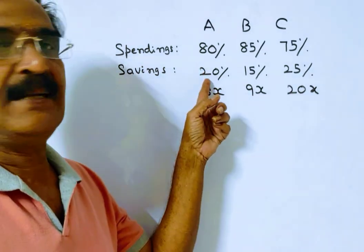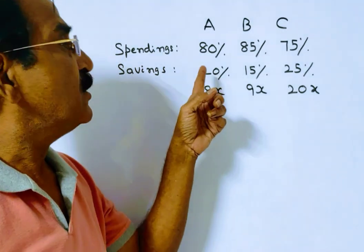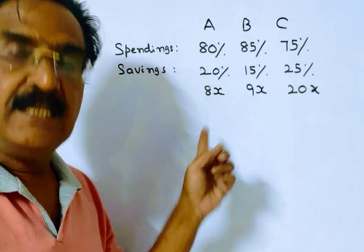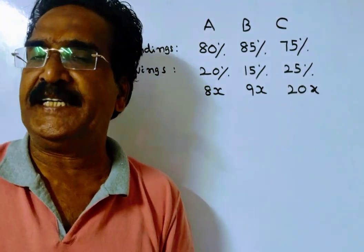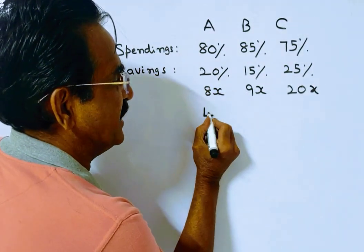So friends, 20% of A's income is his savings. So 20% of A's income is 8x. So if 20% equals 8x, then 100% equals 100 by 20 times 8, which is 40x.